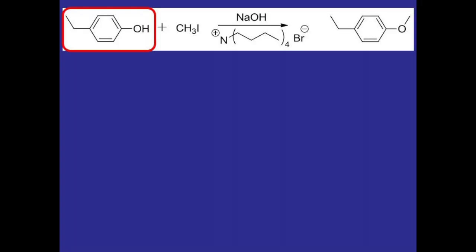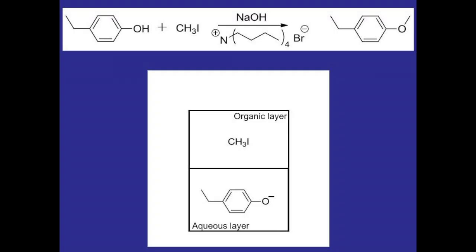Now phenols aren't great nucleophiles. It's not going to backside attack the methyl iodide on its own. So we'll be using NaOH to activate the phenol so that it becomes a good nucleophile. The problem is when the NaOH reacts with the phenol, the deprotonated phenol will move into the aqueous layer where the methyl iodide won't follow. And so we need a way to get these two reagents to interact and to react with each other to form the product.